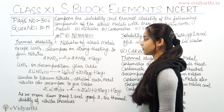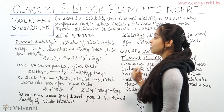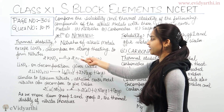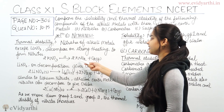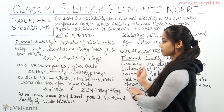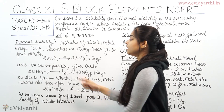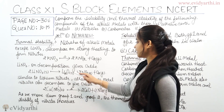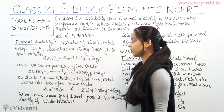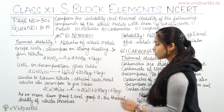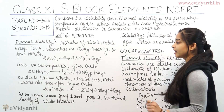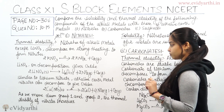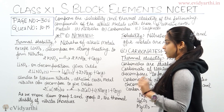Here is the reaction for thermal stability. For potassium: 2KNO₃ on heating gives 2KNO₂ (potassium nitrite) plus O₂. For lithium nitrate, the decomposition gives oxide: 2LiNO₃ (solid) gives Li₂O (lithium oxide) plus 2NO₂ gas plus O₂ gas.